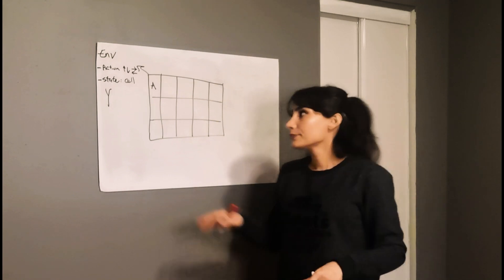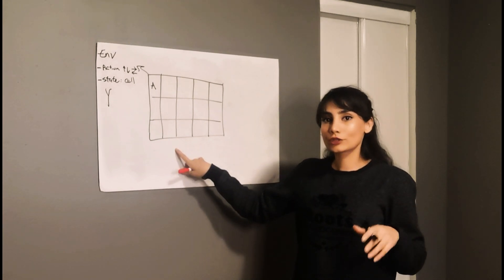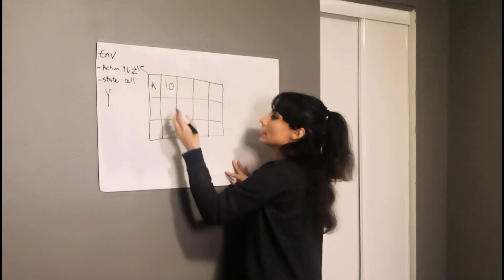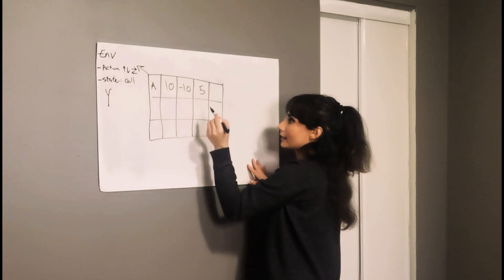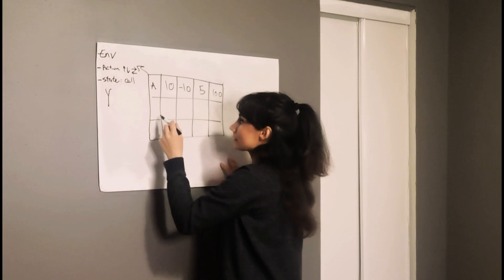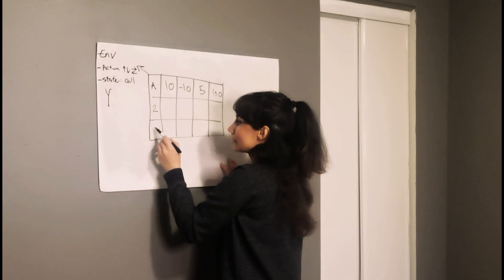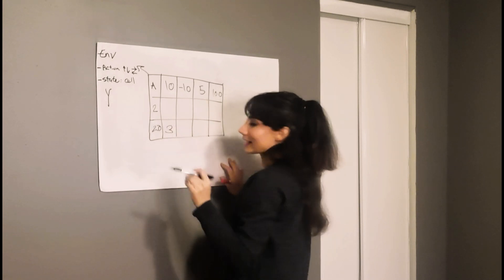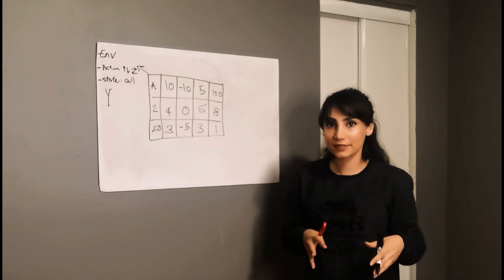My agent is there. I'm going to give each one of these cells a reward or a penalty, and some of them just don't have anything. For example, I have here a 10, then minus 10, then 5, then 100, then 2, then 20, and then 3. I just want to show you two moves across two episodes.